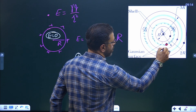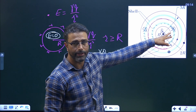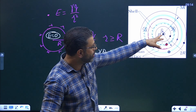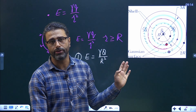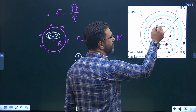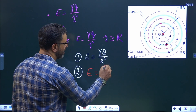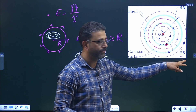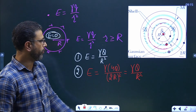For the second Gaussian surface at radius 2R: it encloses the central charge Q and the inner shell of charge 3Q, so it lies outside that shell — which now behaves like a point charge. The outer shell is still outside, so it contributes nothing. Total enclosed charge is Q + 3Q = 4Q. Field = γ(4Q)/(2R)² = γ(4Q)/(4R²) = γQ/R².